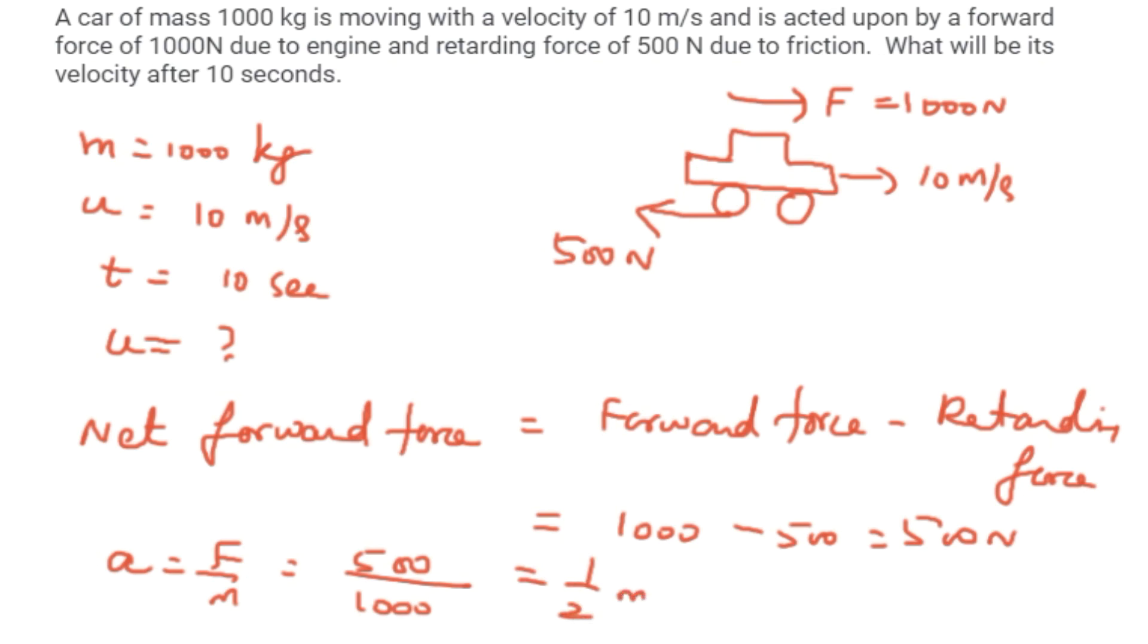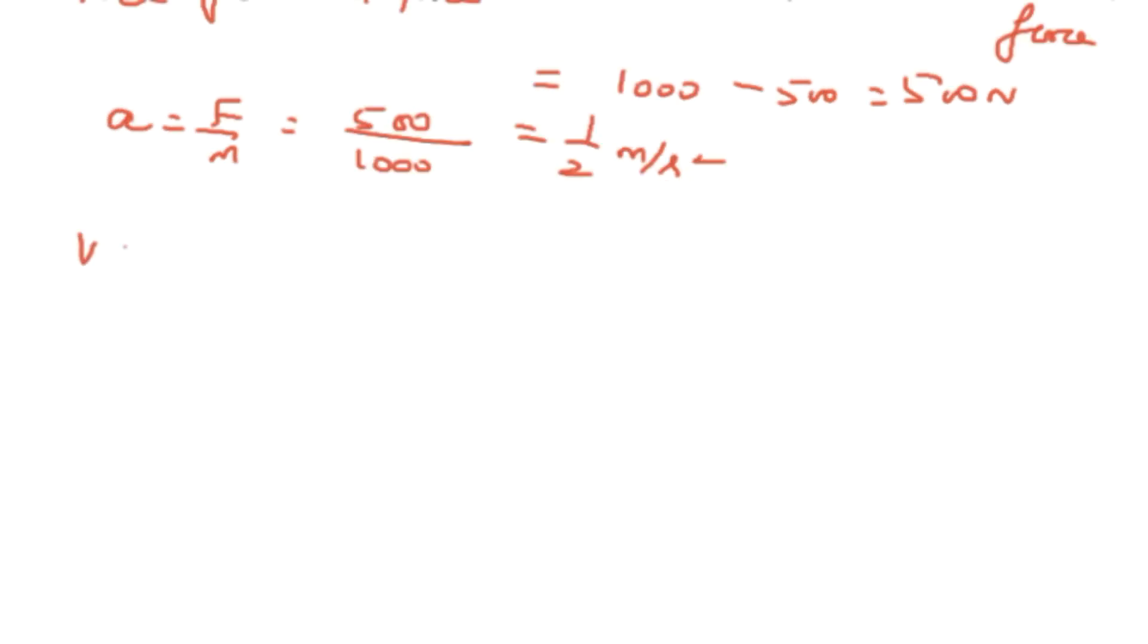We substitute in v is equal to u plus at. That is equal to 10 plus a into t, which equals 10 plus 0.5 into 10, giving us 15 m per second.